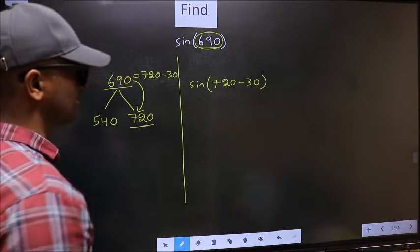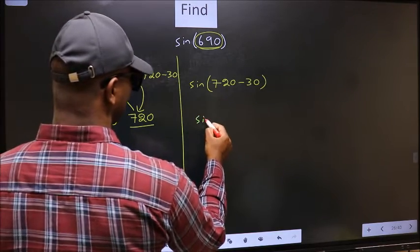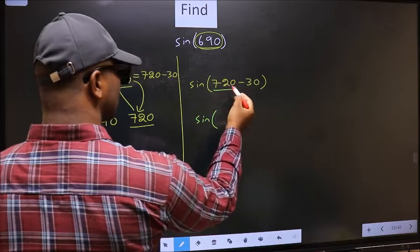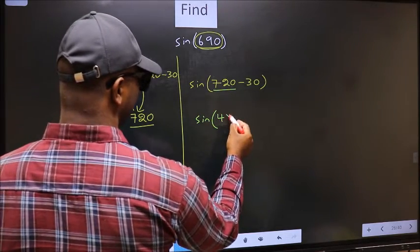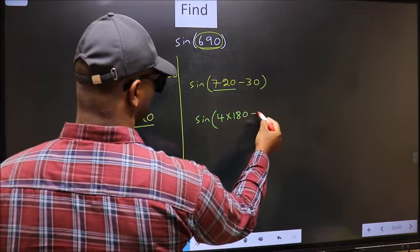Next, sin. Now in place of 720, we should write 4 into 180 minus 30.